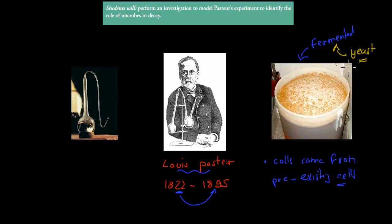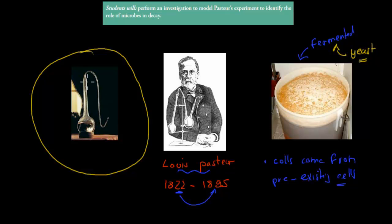Once he realized that, he thought about it a bit more and came up with experiments to show that spontaneous eruption of living things doesn't happen. There has to be cells always coming from pre-existing cells. He did that using his famous experiment with the actual flask he used. It's in Paris, in the museum. The contribution of that experiment is extremely big. We're going to talk about this experiment because students will perform an investigation to model Pasteur's experiment to identify the roles of microbes in decay.